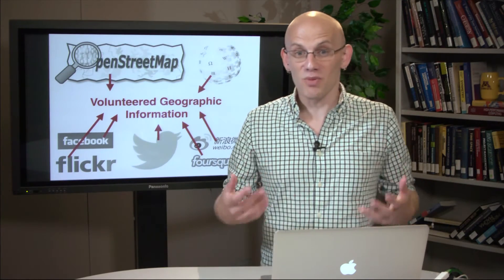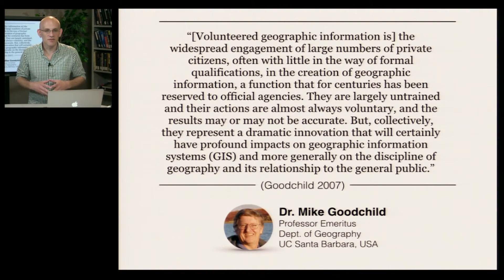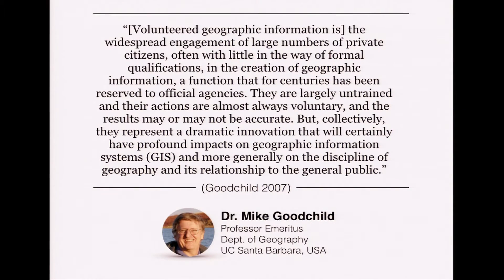All of these examples of people producing and sharing geographic information — whether geotagged tweets or OpenStreetMap contributions — are examples of Volunteered Geographic Information. More formally, Michael Goodchild, the originator of the term, defined VGI as follows: the widespread engagement of large numbers of private citizens, often with little in the way of formal qualifications, in the creation of geographic information, a function that has been for centuries reserved to official agencies. They are largely untrained and their actions are almost always voluntary, and the results may or may not be accurate. But collectively, they represent a dramatic innovation that will certainly have profound impacts on geographic information systems, and more generally, on the discipline of geography and its relationship to the general public.